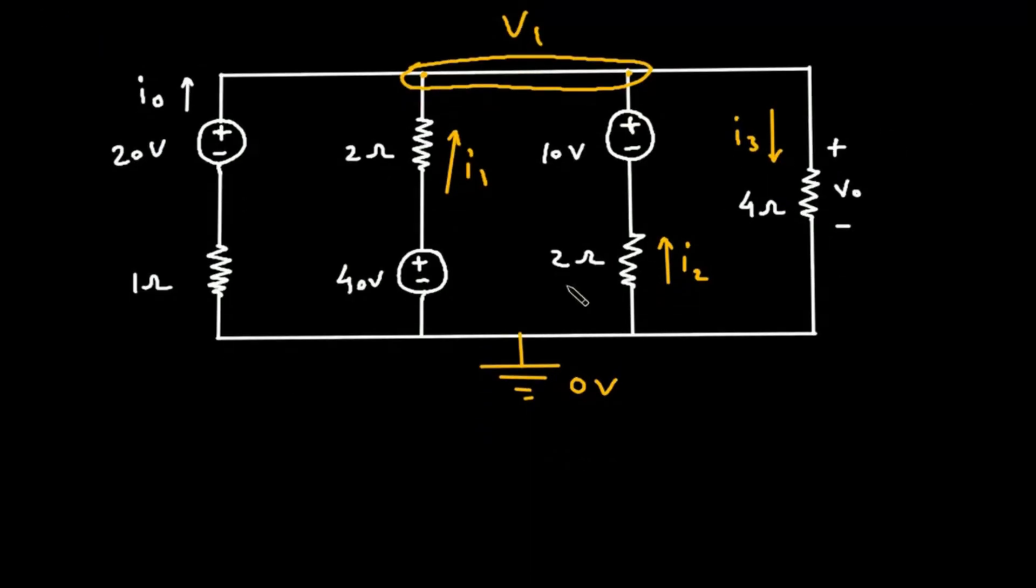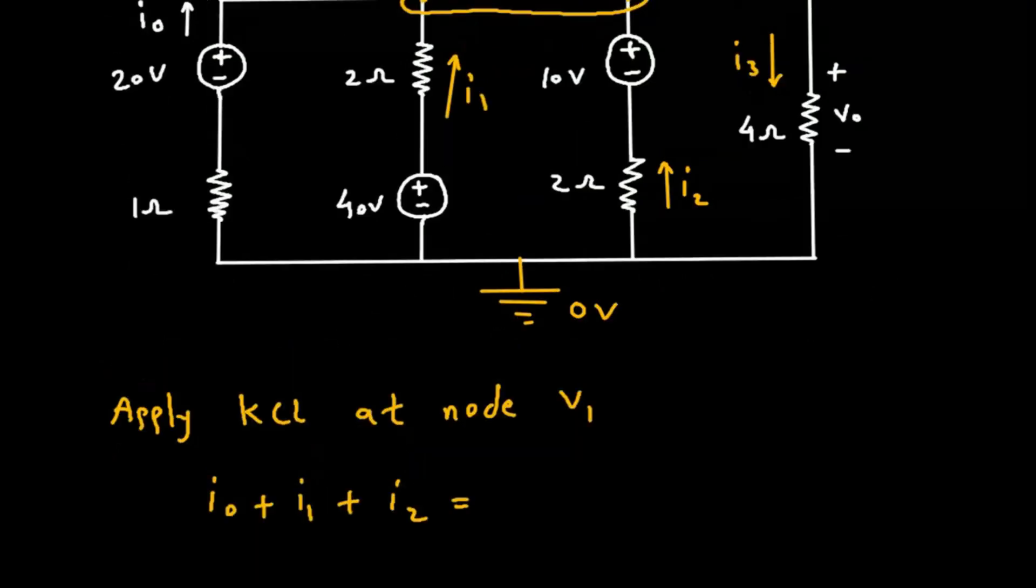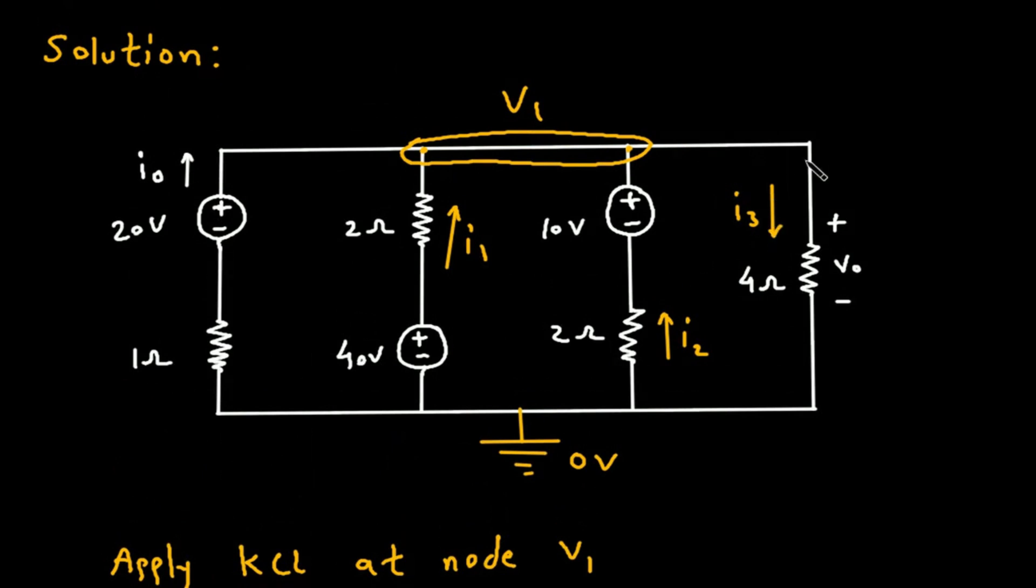Now we will apply KCL at node V₁. For KCL, all the entering currents—I₀ plus I₁ plus I₂—are equal to the summation of leaving currents, which is I₃.